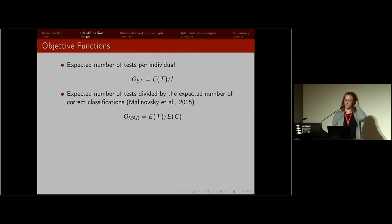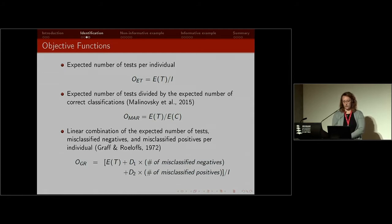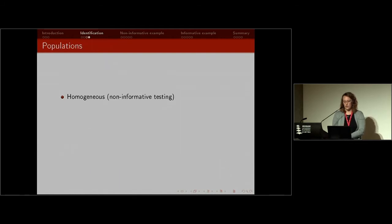A more recent objective function from the group testing literature is the expected number of tests divided by the expected number of correct classifications. This directly incorporates the accuracy of the testing, whereas with the first objective function you would look at accuracy sort of separately. There's also another one from a 1972 paper: a linear combination of the expected number of tests, misclassified negatives, and misclassified positives per individual, where the weights D1 and D2 are subjectively chosen. How you choose those weights can greatly affect the optimal configuration.